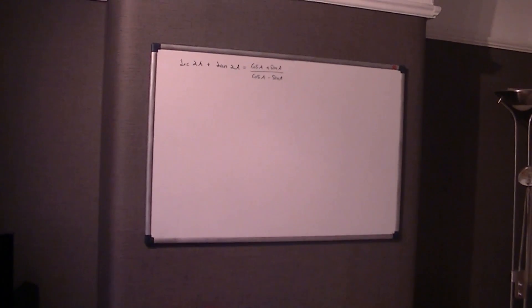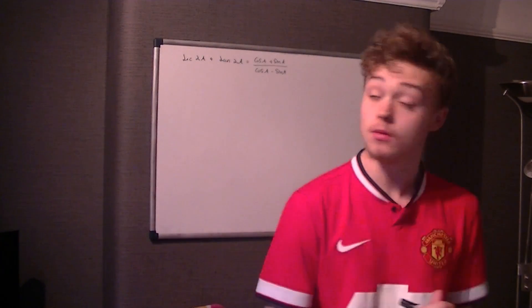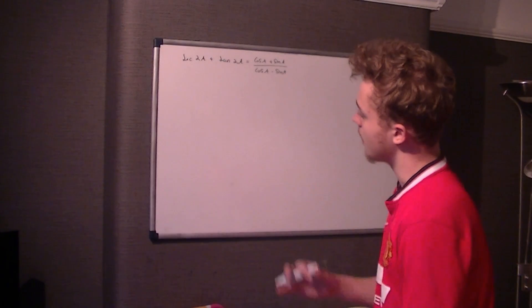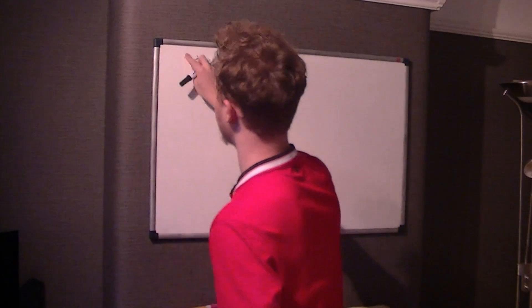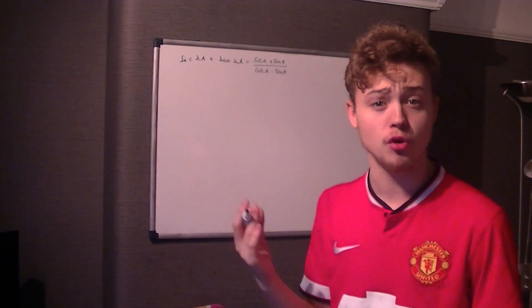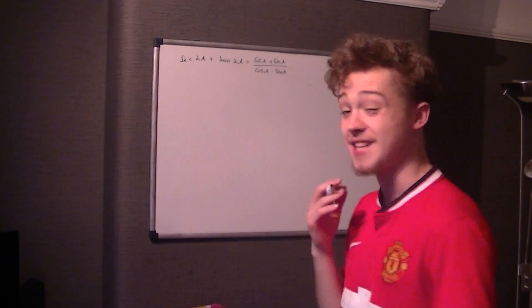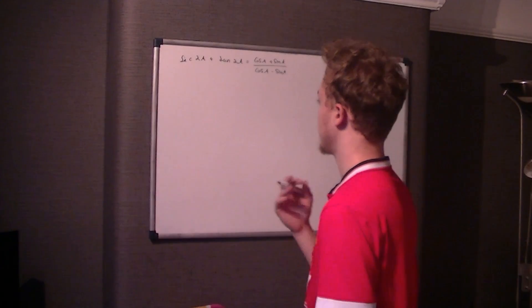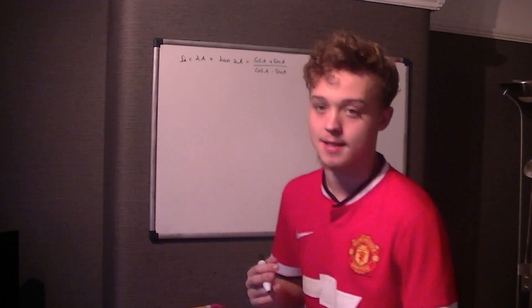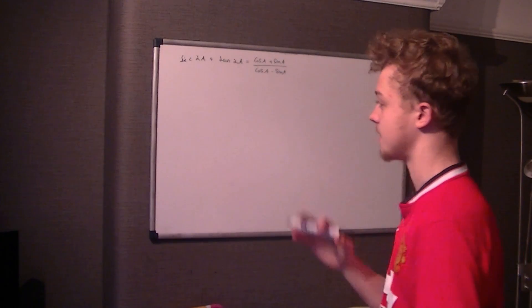Welcome, this is question 8 for an Edexcel C3 June 2015 paper. This question is a really quite nasty one. It says sec 2a plus tan 2a and asks to prove that is equal to (cos a + sin a) over (cos a - sin a). This could easily be replaced with x's, so don't be put off by the fact it says a's.